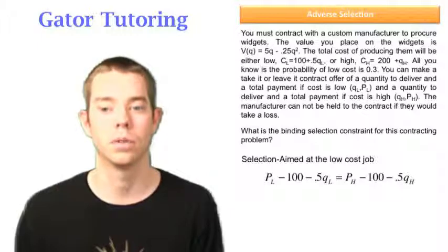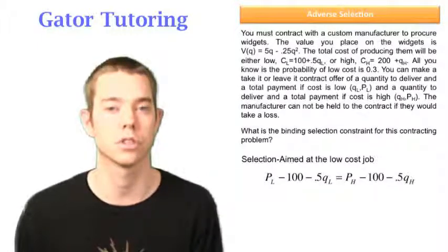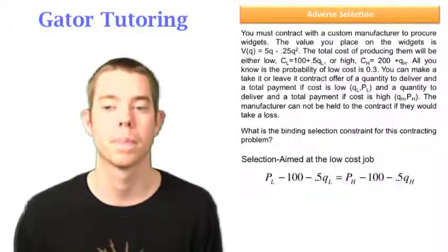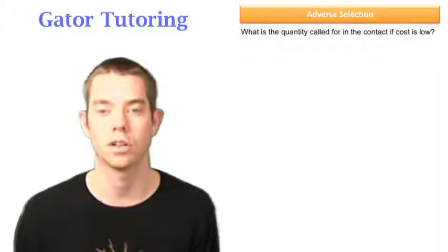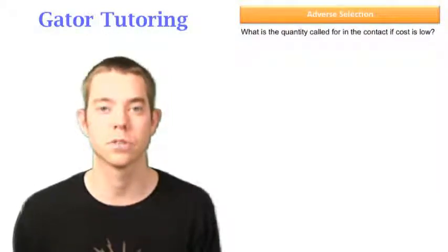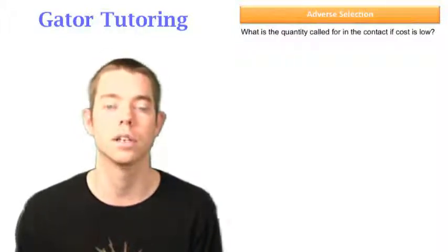So, again, we're incentivizing truth-telling, saying if you go ahead and tell us it's the truth, you'll be better off. The next question says, what is the quantity called for in the contract if costs are low? So, step one is, what are they asking for? And in this case, it's QL. They're asking for the quantity if costs are low.